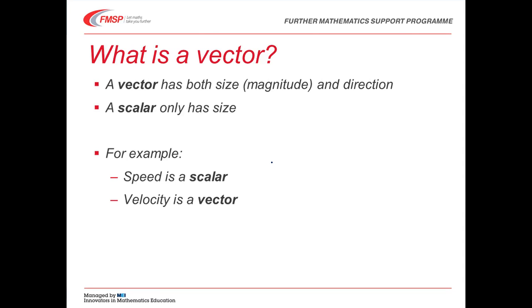I'm sure you remember what a vector is. It's something with both size and direction. And the standard examples to help you remember the difference, speed is a scalar and velocity is a vector.